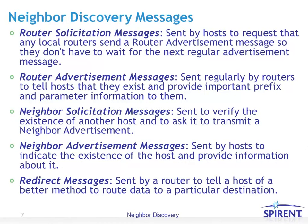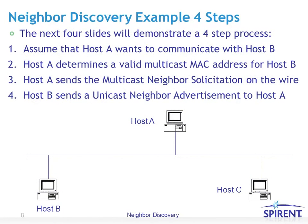This slide gives more detail on the different message types — router solicitation, router advertisement, neighbor solicitation, neighbor advertisement, and redirect messages — each sent for different reasons covered in the following slides. Let's look at a Neighbor Discovery example and the four-step process. The next four slides will demonstrate each of the four steps separately.